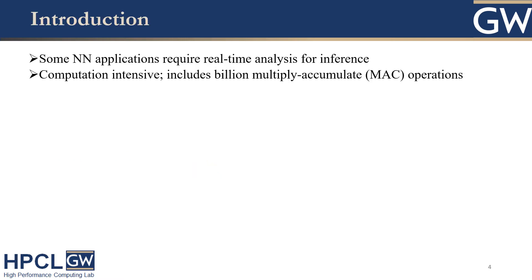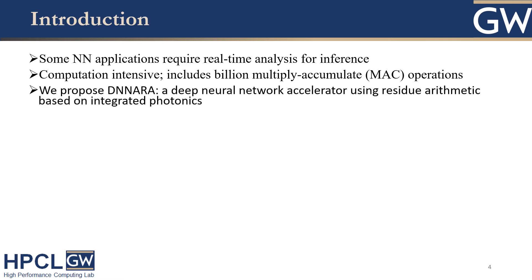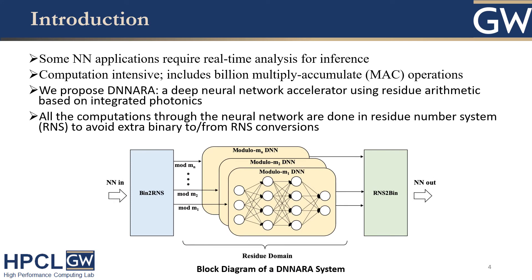Neural network applications are everywhere nowadays. Some of them require real-time analysis. However, they are computation intensive — they could include up to a billion multiply-accumulate operations. Previous research shows that MAC operations could cover more than 90% of the execution time. To better address this problem, we propose DNARA, a Deep Neural Network Accelerator using Residue Arithmetic based on Integrated Photonics.